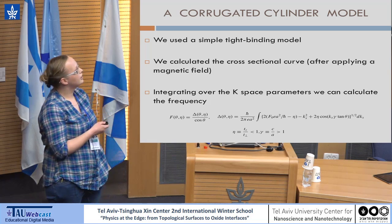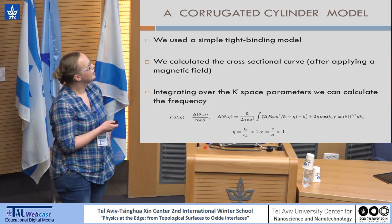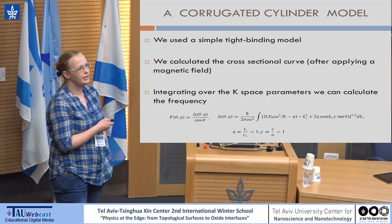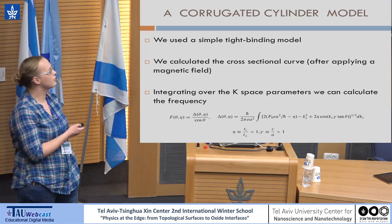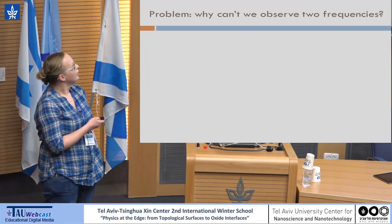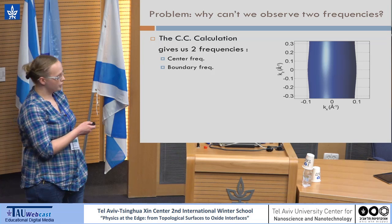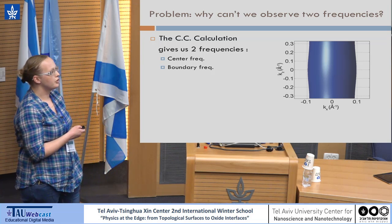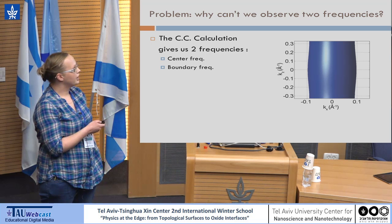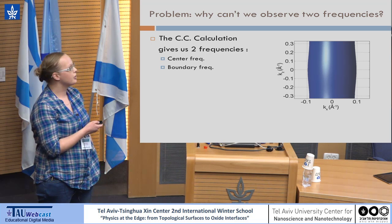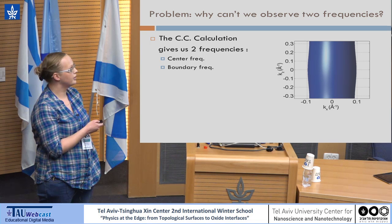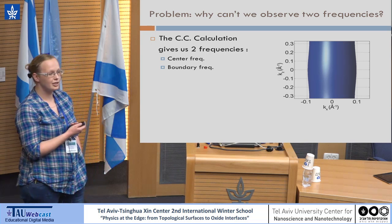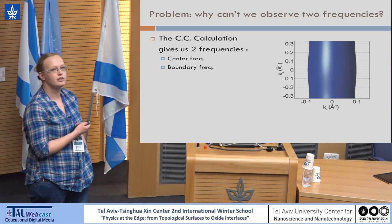We found that a better fit is a corrugated cylinder model, using a simple tight-binding model, and with our frequency data we reconstructed the Fermi surface as a corrugated cylinder. For a corrugated cylinder you would expect two frequencies, corresponding to the two cross-sections: one at the centre of the Brillouin zone and one at the Brillouin zone boundary. However, we observe only one well-distinguished frequency.